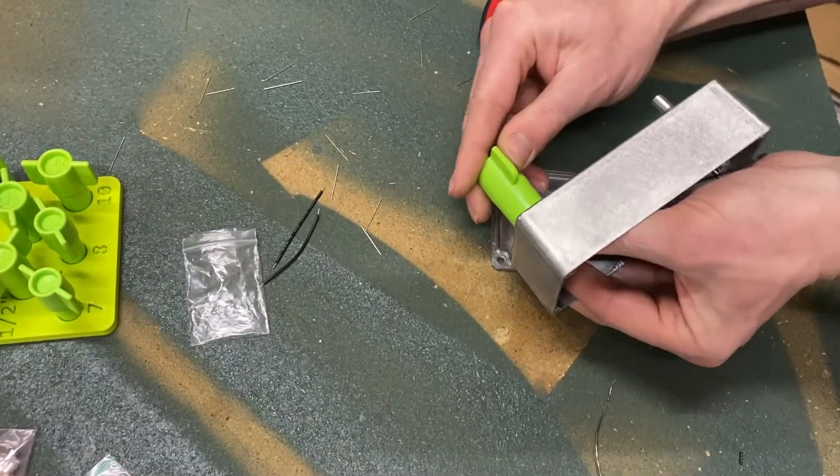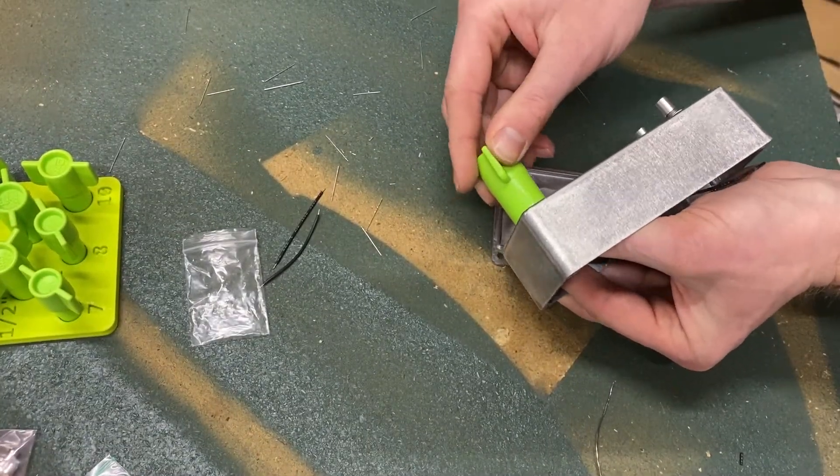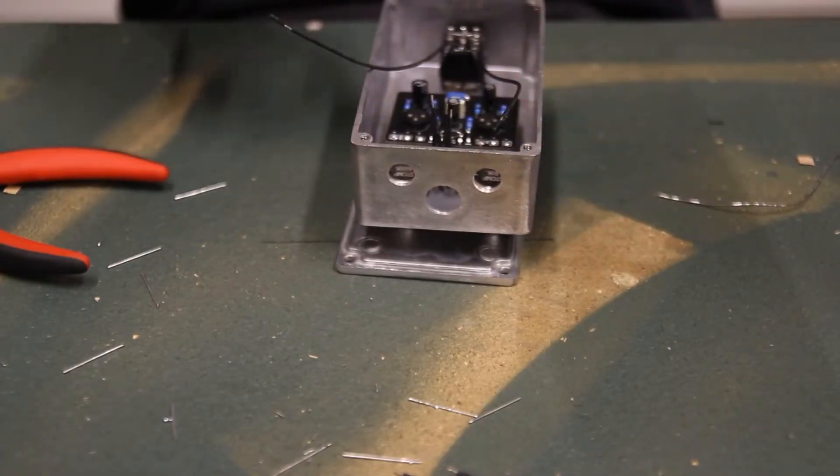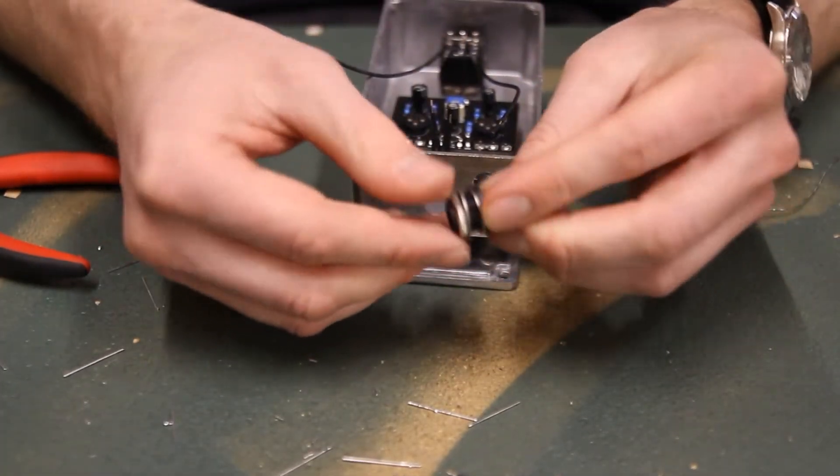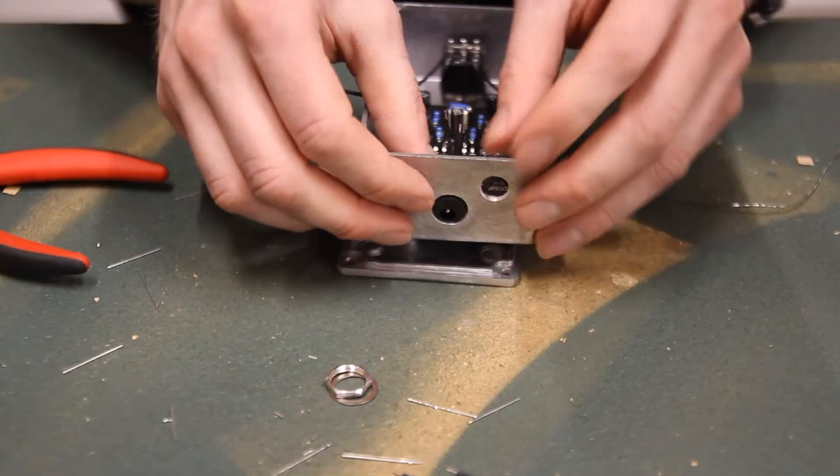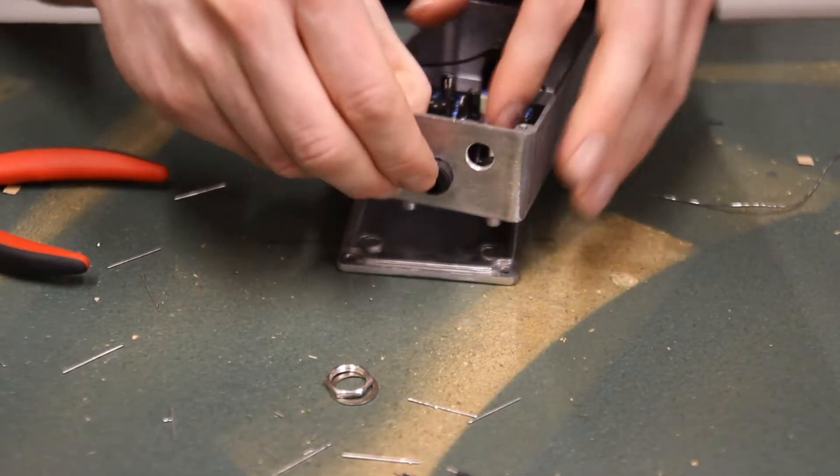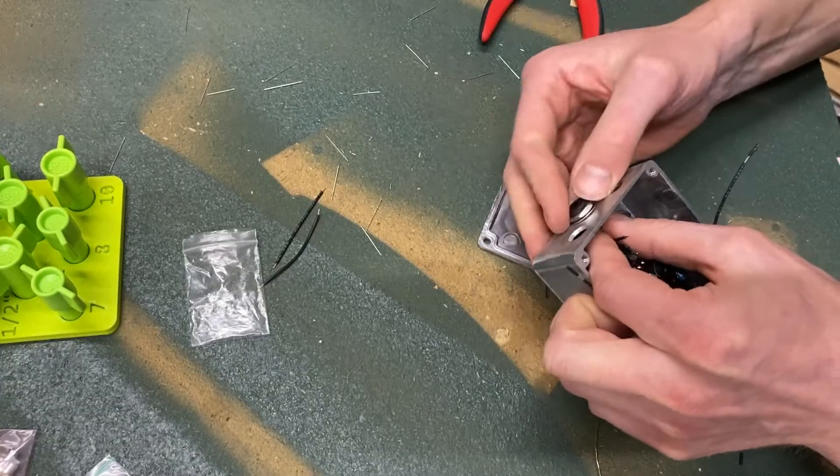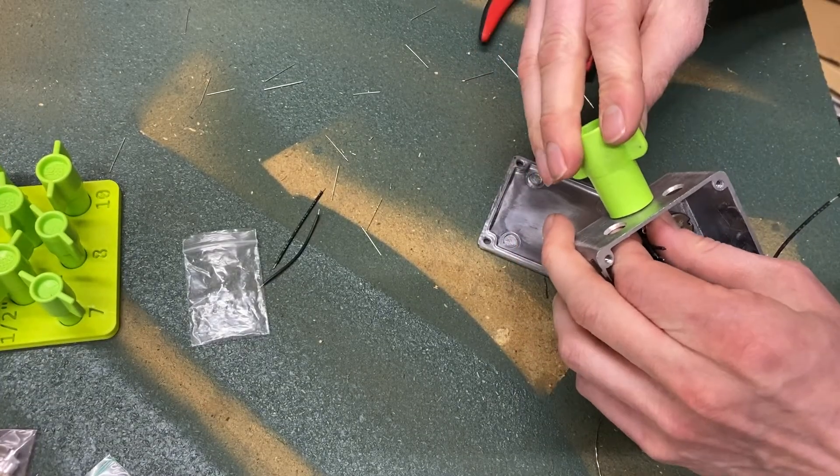It's starting to look like a pedal now. Grab the DC jack, keep the star washer on the jack and insert the jack from the inside of the pedal. Put the flat washer on top and install the DC jack nut. You'll need to hold the DC jack while tightening the nut with your fingers or tweezers if you have them.